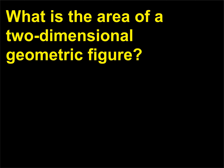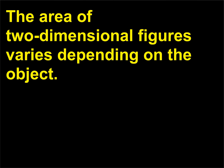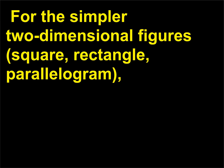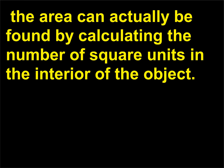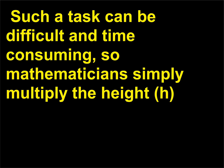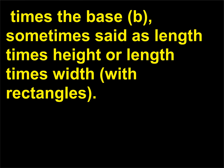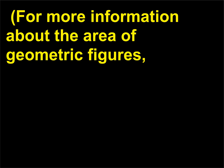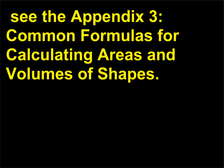What is the area of a two-dimensional geometric figure? The area of two-dimensional figures varies depending on the object. For the simpler two-dimensional figures — square, rectangle, parallelogram — the area can actually be found by calculating the number of square units in the interior of the object. Such a task can be difficult and time consuming, so mathematicians simply multiply the height (h) times the base (b) — sometimes set as length times height or length times width with rectangles. For more information about the area of geometric figures, see Appendix 3: Common Formulas for Calculating Areas and Volumes of Shapes.